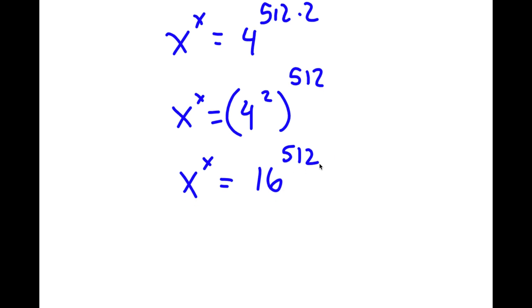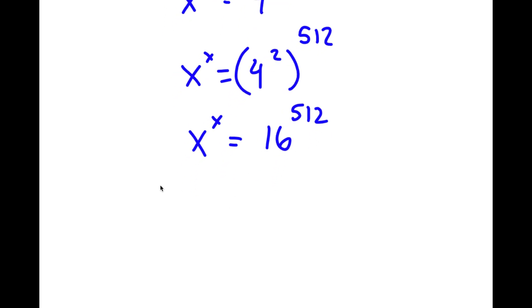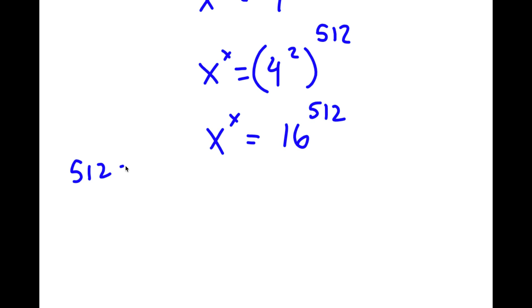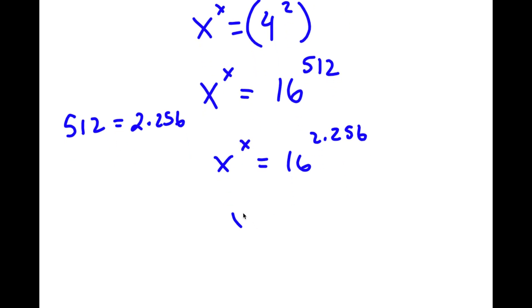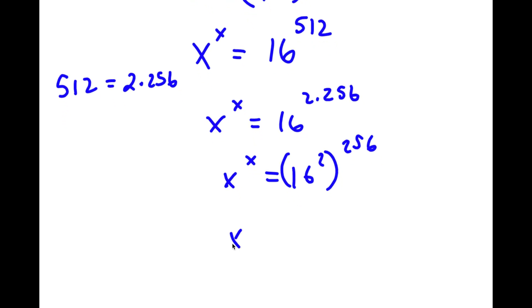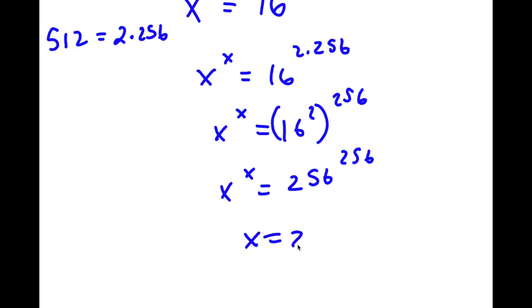Repeating the same process: 512 equals 2 times 256, so x to the power of x equals 16 to the power of 2 times 256, which is the same as 16 squared to the power of 256, which equals 256 to the power of 256, meaning x is equal to 256.